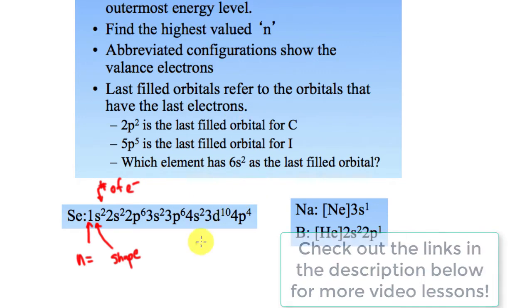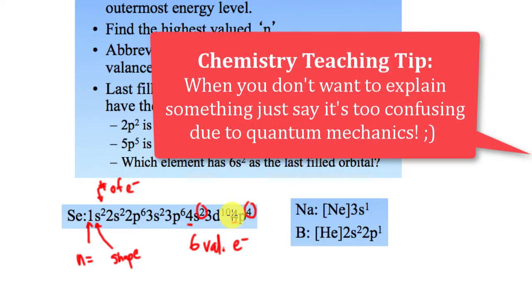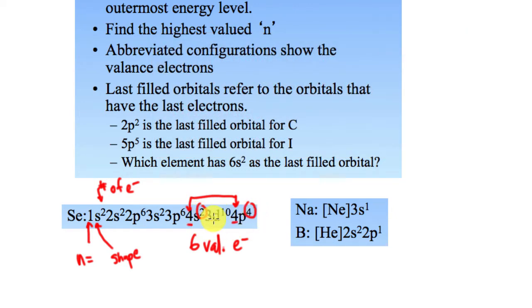What we're looking for for valence electrons is the highest number here, so we're looking for a 4 and a 4. So for selenium, we're going to have four electrons from the 4p and two electrons from here. So there would be six valence electrons. Be careful with following the aufbau principle because it's confusing. We're looking at the highest energy level, which is energy level 4, and energy level 4 has six electrons. We ignore the 3d because they're technically in energy level 3. It's a result of quantum mechanics due to overlapping orbitals.